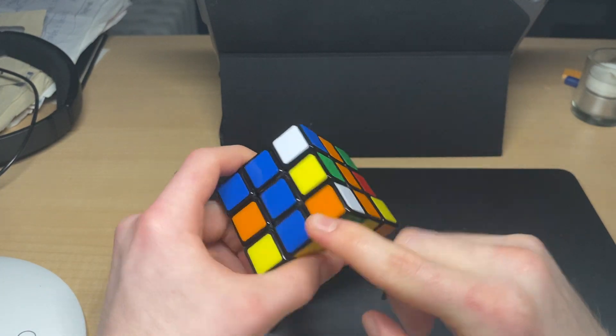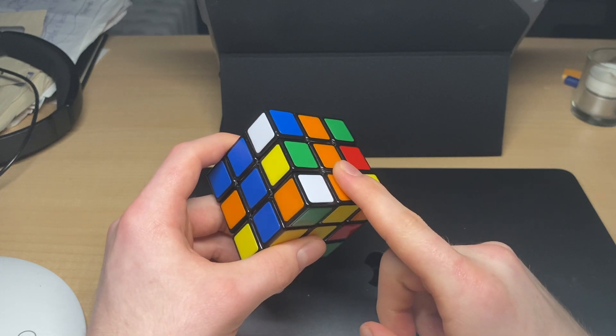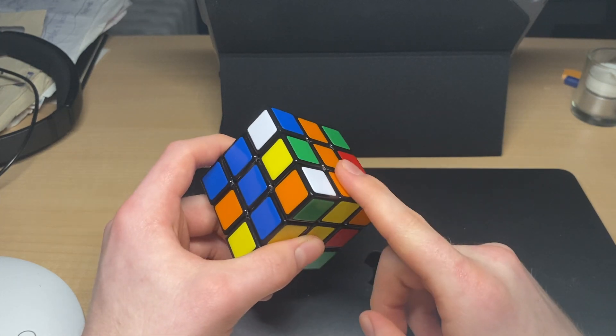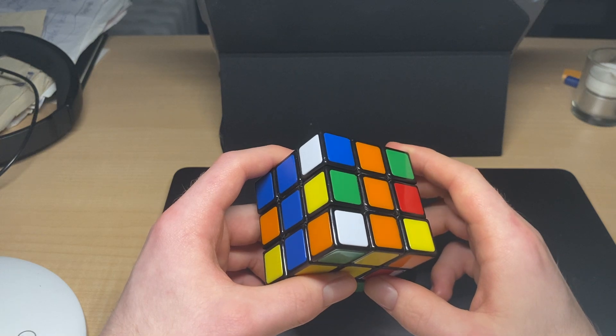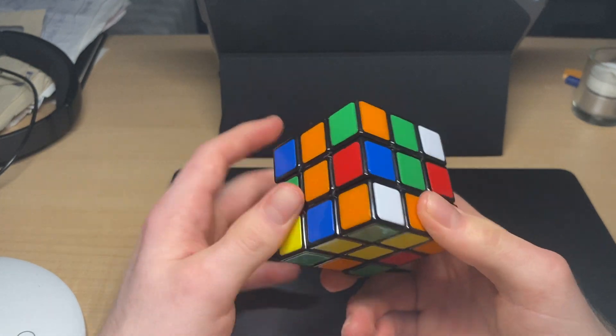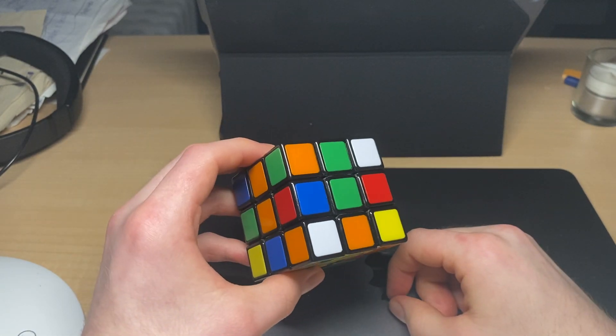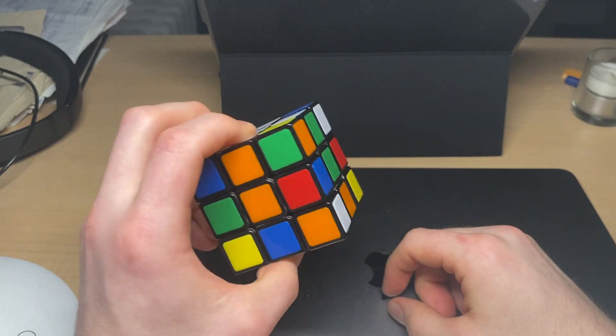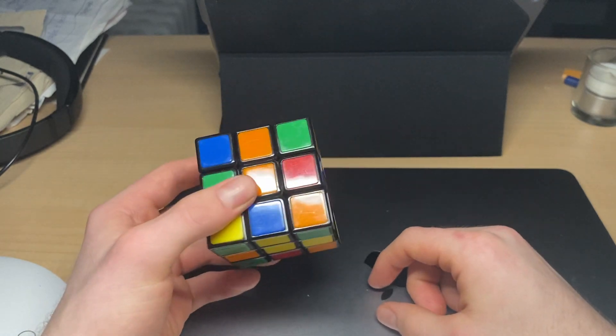It needs to go in between green and orange. This is blue and orange. Where is green and orange? Well, that's over here. Now we're here and it's in position now to be put in.